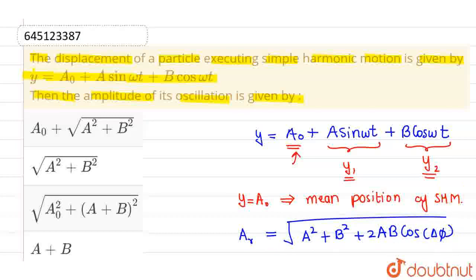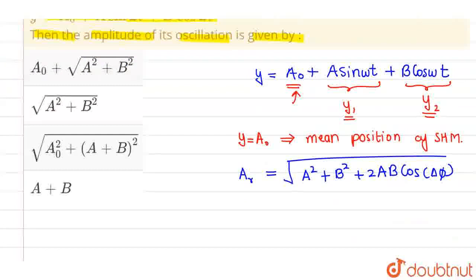Plus 2AB into cos of delta phi, where delta phi is nothing but phase difference.